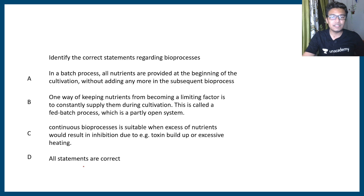Second question: identify the correct statement regarding bioprocesses. In a batch process, all nutrients are provided at the beginning of the cultivation without adding any more in the subsequent bioprocess. Second statement: one way of keeping nutrients from becoming a limiting factor is to constantly supply them during cultivation. This is called a fed batch process, which is partly an open system. Continuous bioprocess is suitable when excess of nutrients would result in inhibition due to toxin buildup or excessive heating.